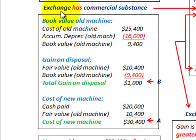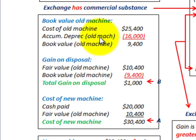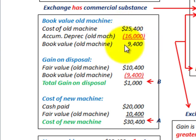First, let's look at the case where the exchange has commercial substance. The book value of the old machine is computed as the cost of the old machine less accumulated depreciation. That gives us the book value of the old machine — in this case, $9,400.